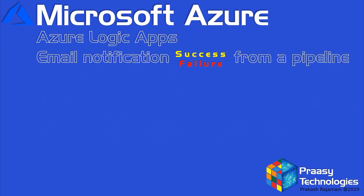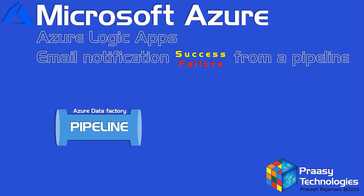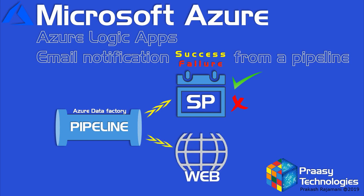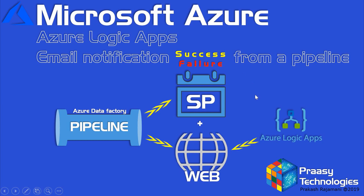In this use case scenario we are going to create an Azure Data Factory pipeline. In this pipeline we will call a stored procedure activity. If the stored procedure executes successfully, we will send a success email notification. Else, if the stored procedure fails, we will send a failure notification to the user. For this purpose we will use a web activity, which will be linked to a newly created Logic App for sending success or failure notifications. Let's jump into the demo.